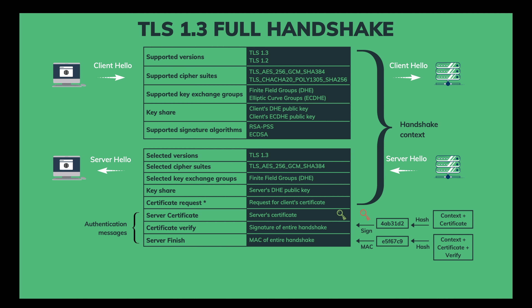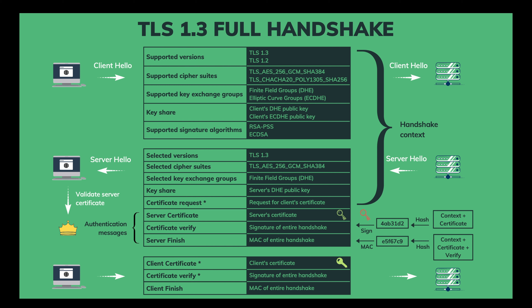With the signature and MAC of the entire handshake, TLS 1.3 is safe against several types of man-in-the-middle downgrade attacks. After the client receives the hello message from the server, it validates the server's certificate with the root authority and checks the signature and MAC of the entire handshake to make sure it hasn't been tampered with. If everything is good, the client sends its Finished message with the MAC of the entire handshake up to that point, and optionally the client's certificate and certificate verify if the server requested it. And that's the whole flow of the full TLS handshake.